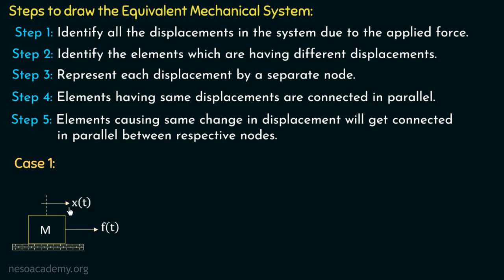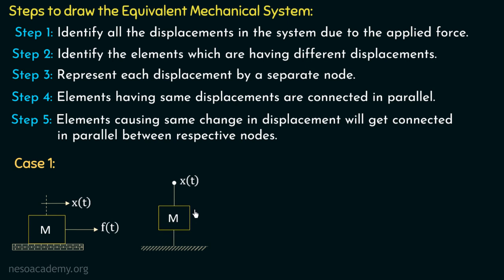Moving to step number two, we identify elements with different displacements. In this case, we have only one element — mass m — with only one displacement x(t). In step number three, we represent displacement x(t) with a separate node, consider a reference level with respect to this node, and connect the mass m between this node and the reference level. This represents that mass m is undergoing displacement x(t), and this is the equivalent mechanical system. Since there is only one element, steps four and five do not apply.